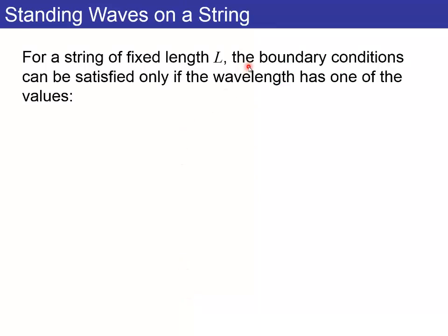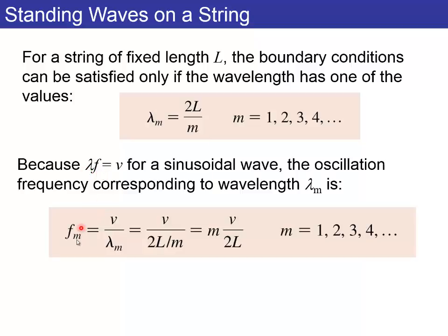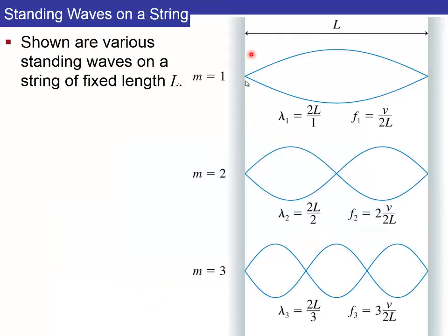So for a string of fixed length L, the boundary conditions can only be satisfied if you have nodes at both ends, right? So that will only happen if the wavelength is some 2L divided by an integer, M equals one, two, three, or four. But since you still have the speed, which speed of the waves is lambda times F, you can find the frequencies of these different waves as being M some integer times V over 2L, where L is the length of the string. And the lowest frequency, M equals one, is what's called the fundamental frequency, speed of waves divided by two times L. And that would be, M equals one as the fundamental frequency looks like this. You have one antinode and two nodes.